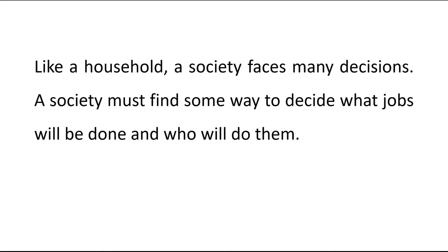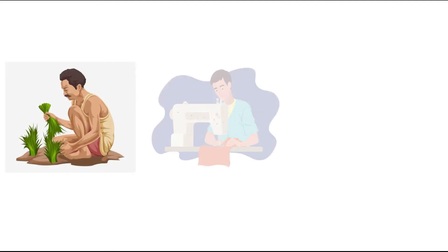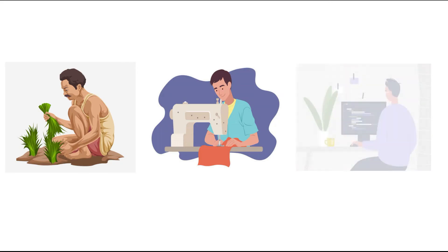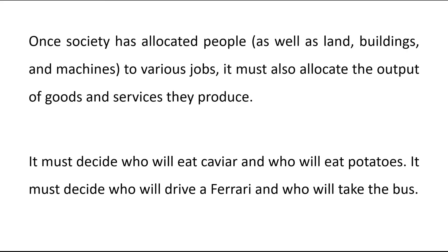Like a household, a society also faces many decisions. A society must find some way to decide what jobs will be done and who will do them. For example, a society needs people to grow food, other people to make clothing, and still others, as well as land, buildings, and machines allocated to various jobs. It must allocate the output of goods and services that they produce — deciding who will eat caviar and who will eat potatoes, who will drive a Ferrari and who will take the bus.